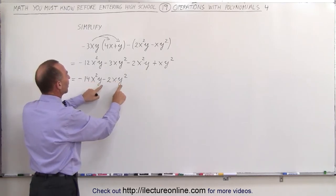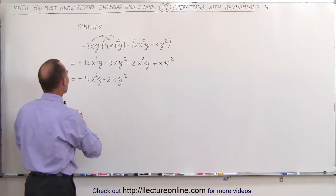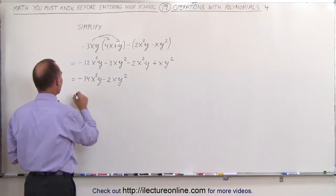Now we apply the negative sign to this. This becomes minus 2x squared y. And a minus times a minus becomes plus xy squared.